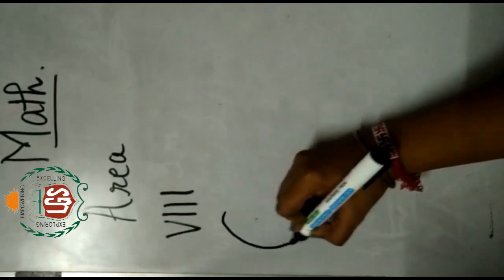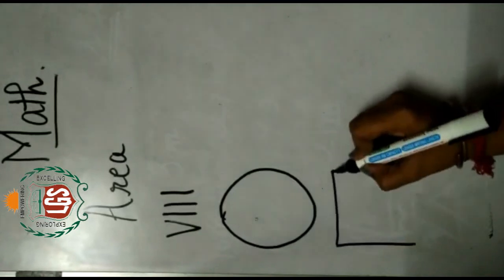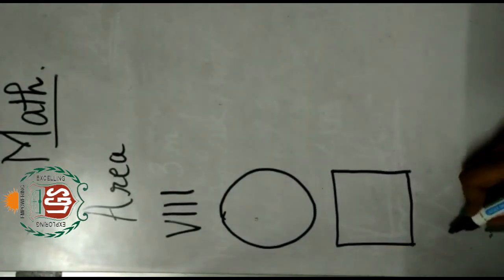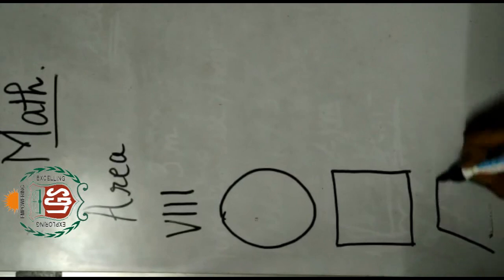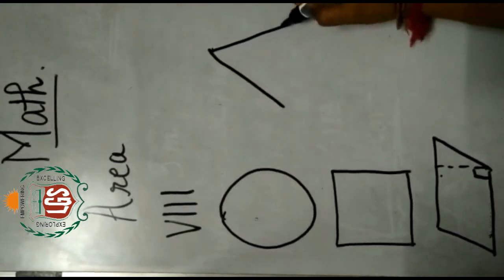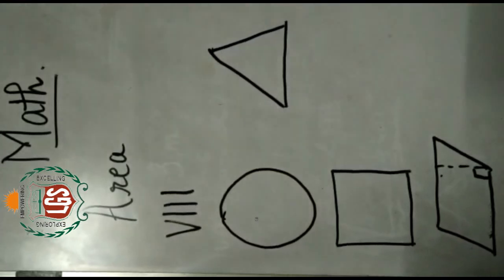I will be drawing few geometrical structures and I am sure you will be able to recognize what I am trying to draw. This is a circle. This is a square. This is a parallelogram. This is a triangle.